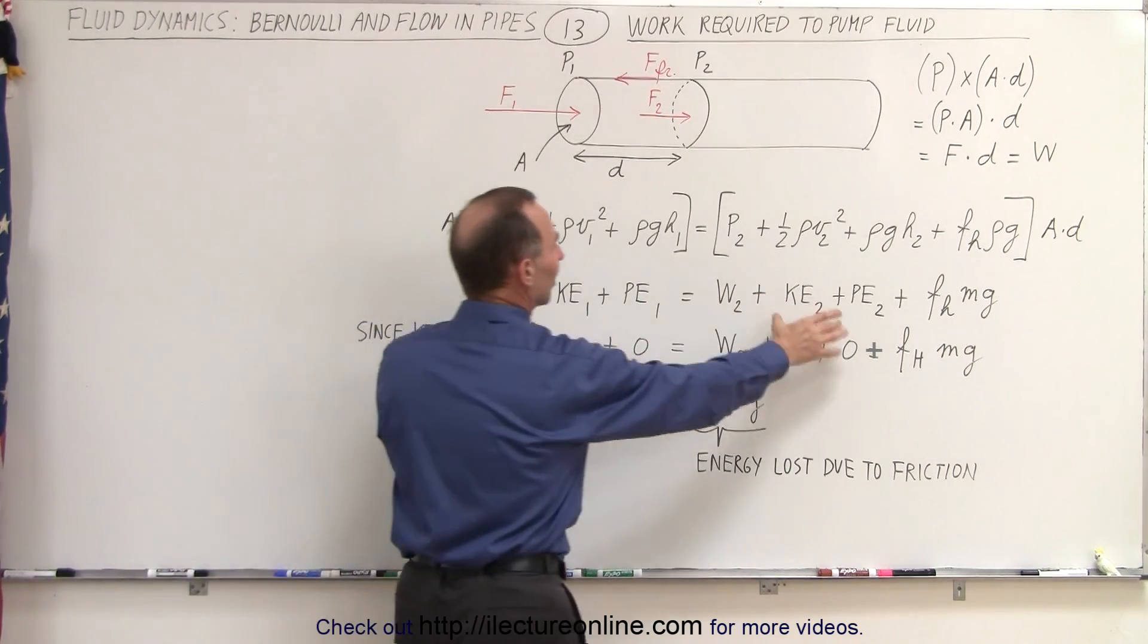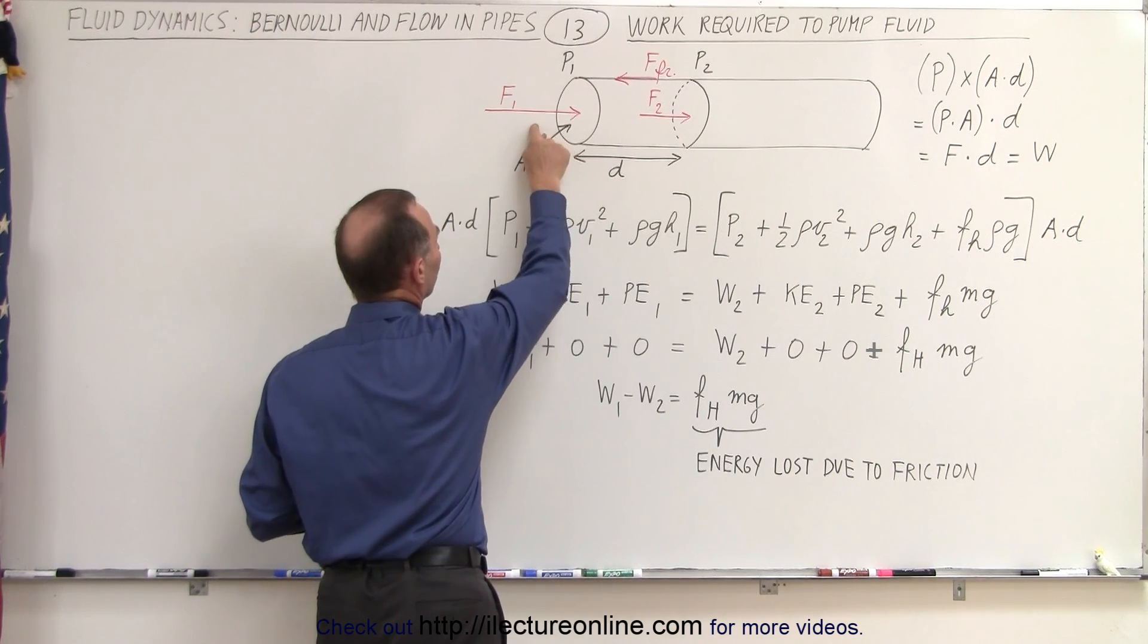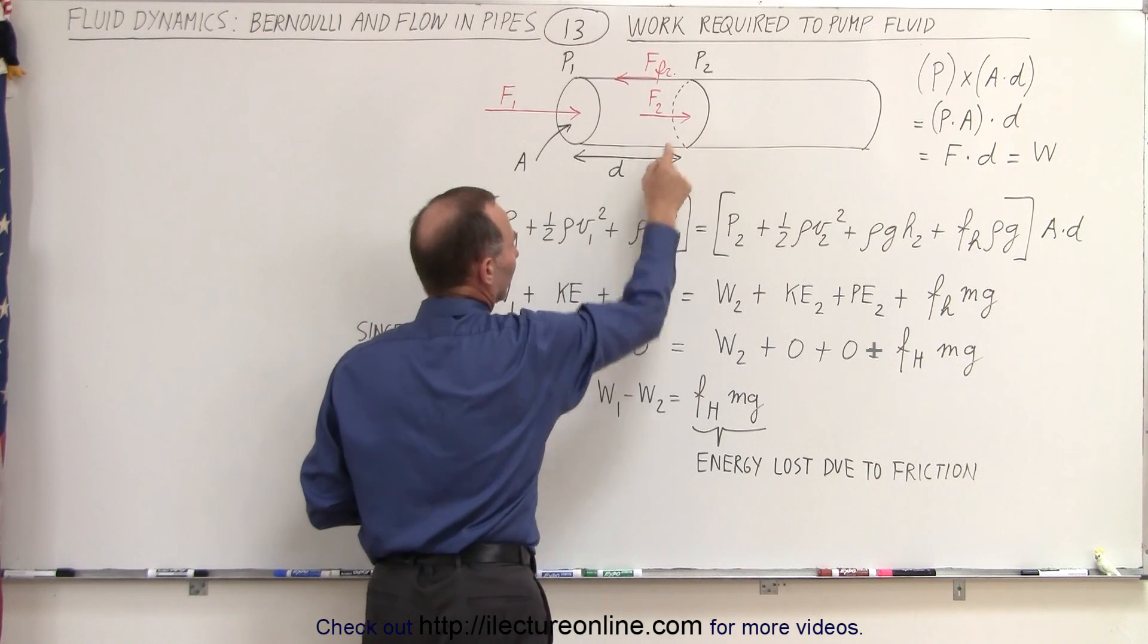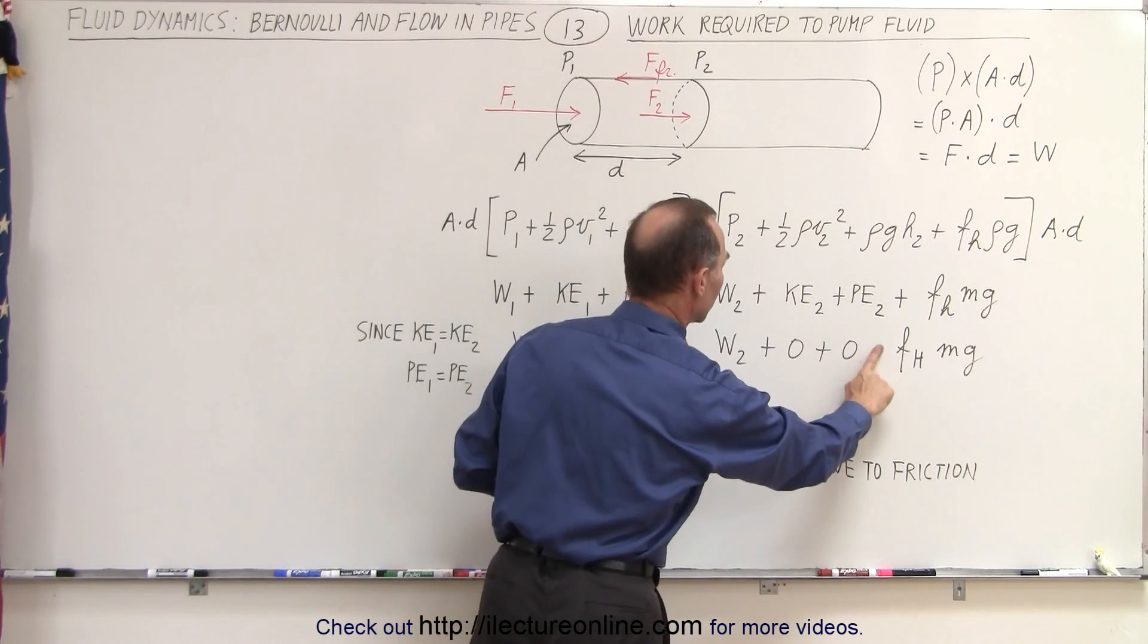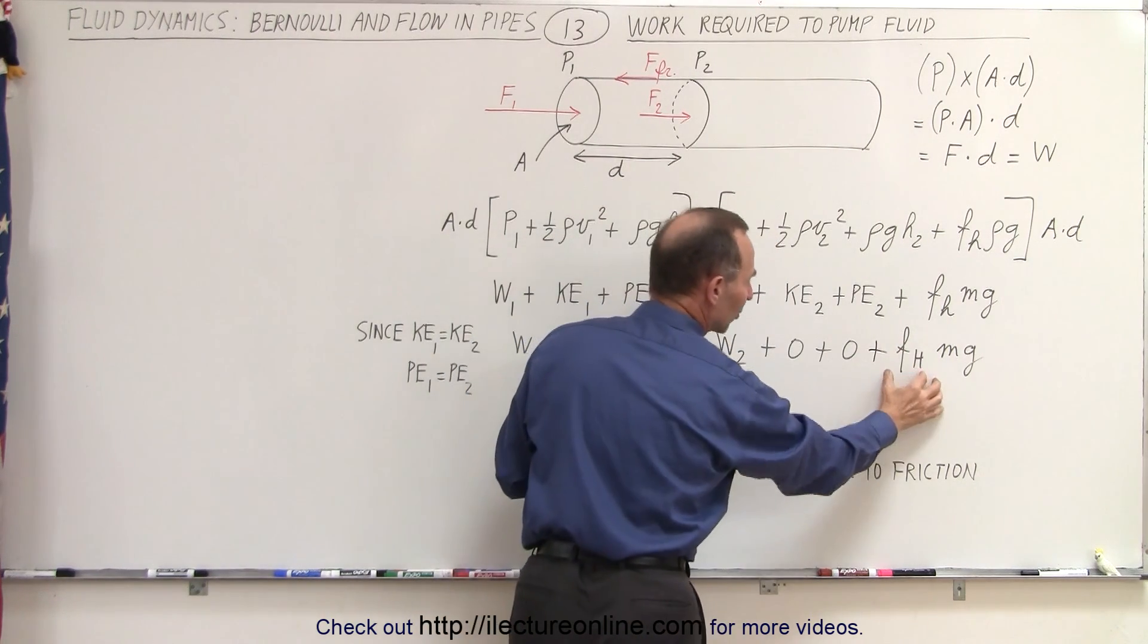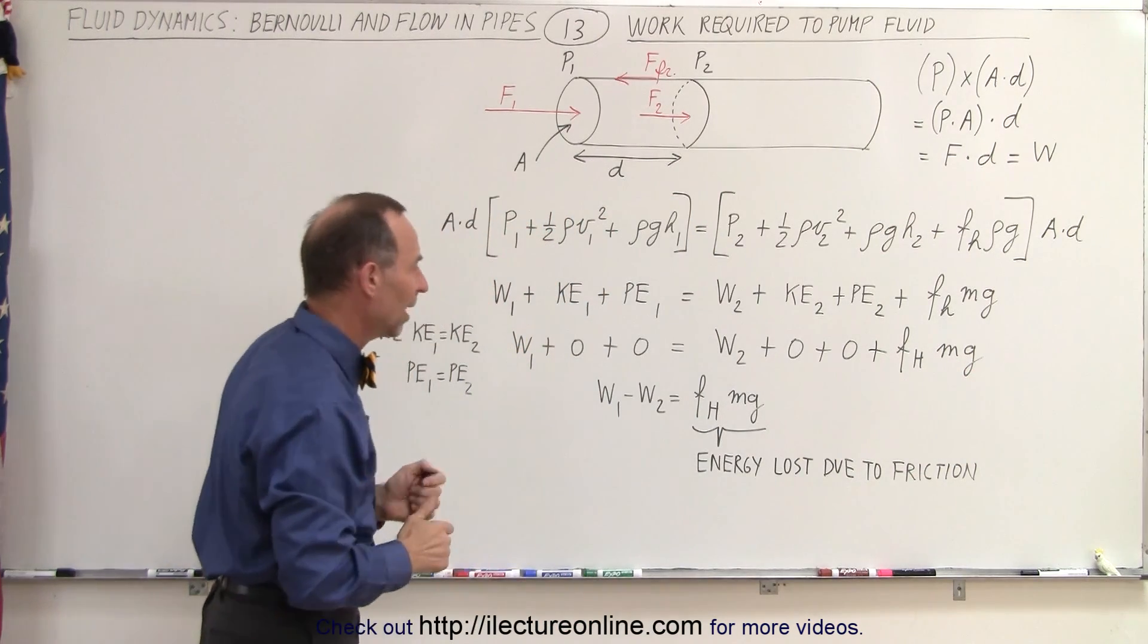So therefore these terms can then be set equal to zero and we have work done by the force over here is going to be equal to the work done by the force over there plus, and let's see here, this shouldn't be an equal sign this should be plus, plus the frictional head loss times the weight of the fluid inside that section of pipe.